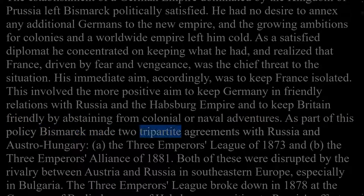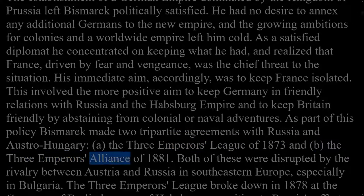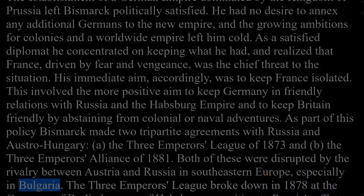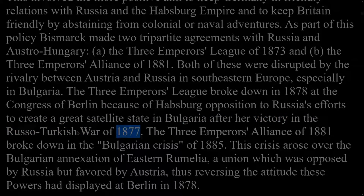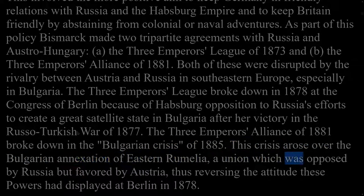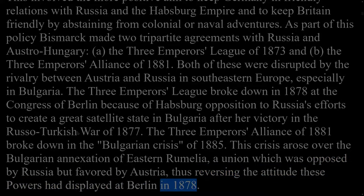Bismarck made two tripartite agreements with Russia and Austria-Hungary: the Three Emperor's League of 1873 and the Three Emperor's Alliance of 1881. Both were disrupted by the rivalry between Austria and Russia in southeastern Europe, especially in Bulgaria. The Three Emperor's League broke down in 1878 at the Congress of Berlin because of Habsburg opposition to Russia's efforts to create a satellite state in Bulgaria after the Russo-Turkish War of 1877. The Three Emperor's Alliance of 1881 broke down in the Bulgarian Crisis of 1885, which arose over the Bulgarian annexation of Eastern Rumelia, opposed by Russia but favored by Austria.